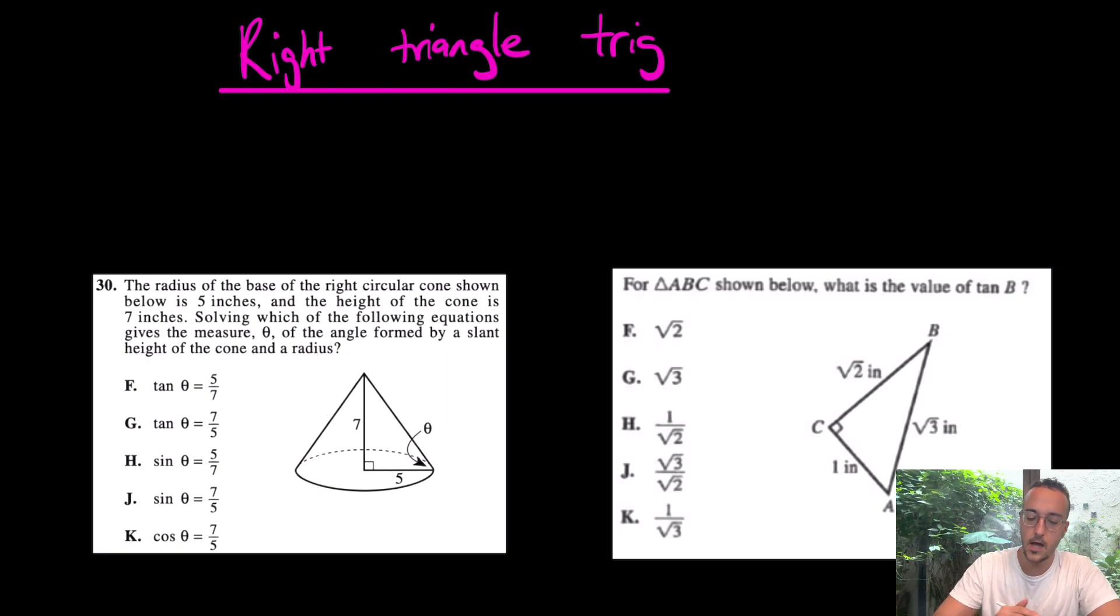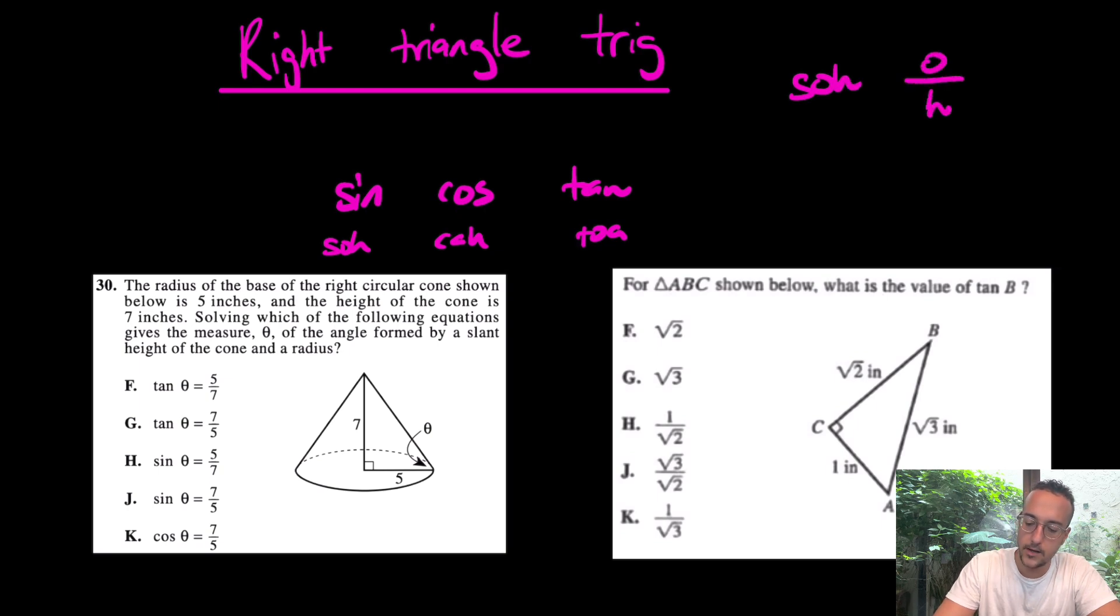Let's start with some easy ones. First of all, right triangle trig, what does that mean? This is sine, cosine, and tangent. Of course, SOHCAHTOA. And if you need a little reminder there, what is SOH? SOH is opposite over hypotenuse, CAH is adjacent over hypotenuse, and TOA is going to be opposite over adjacent.